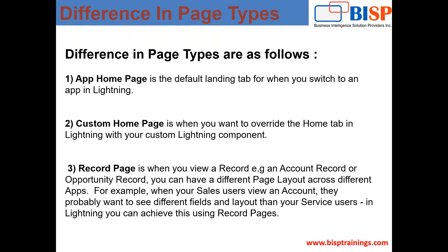One more thing about the difference between these pages. There are three types: app page, custom home page, and record page. The app homepage is the default landing page when you switch to an app in Lightning, and this lightning page can also be added to our apps. A custom home page is used when you want to override the home tab in Lightning with your custom lightning component, meaning we are able to override our home page. The record page helps to view records and tailor custom objects in Salesforce.